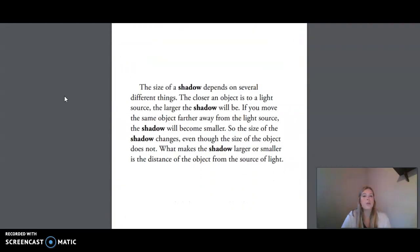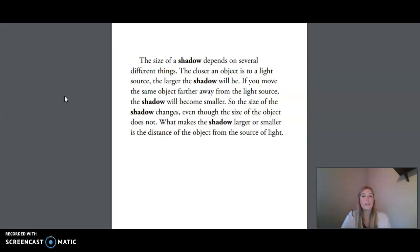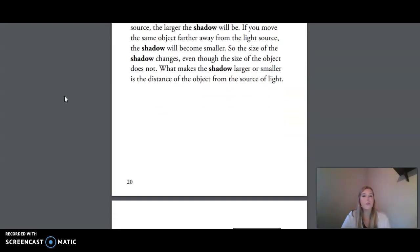The size of a shadow depends on several different things. The closer an object is to a light source, the larger the shadow will be. If you move the same object farther away from the light source, the shadow will become smaller. So the size of the shadow changes even though the size of the object does not. What makes the shadow larger or smaller is the distance of the object from the source of light.